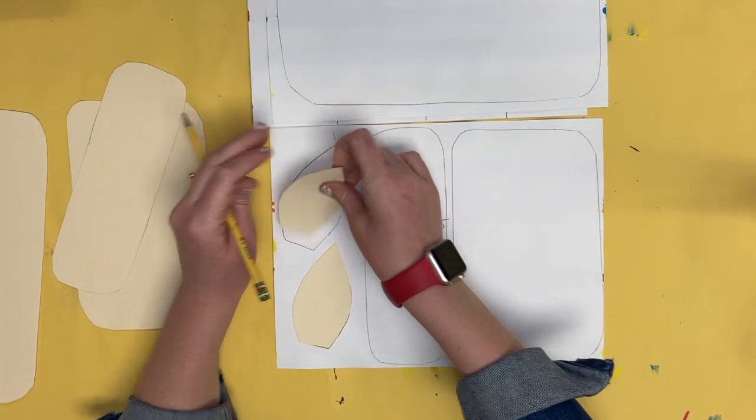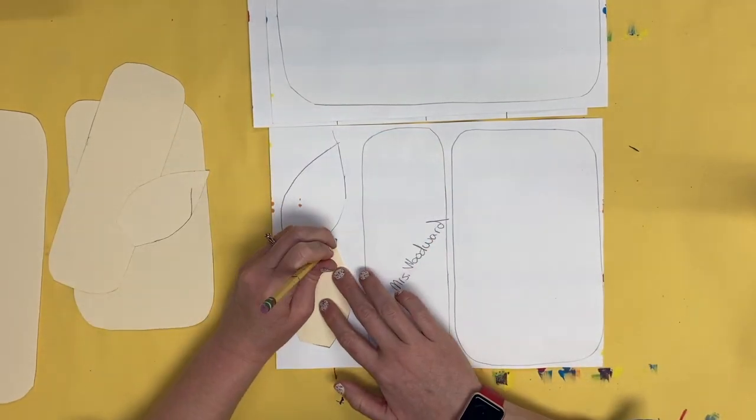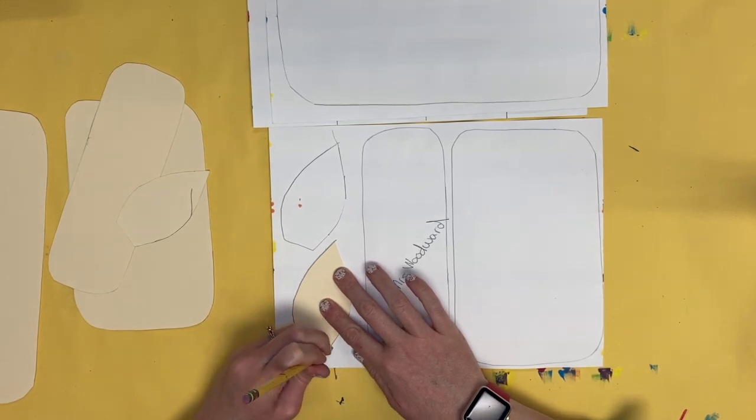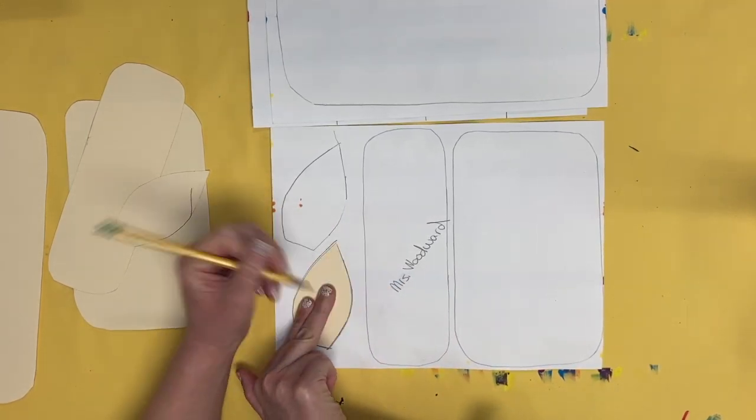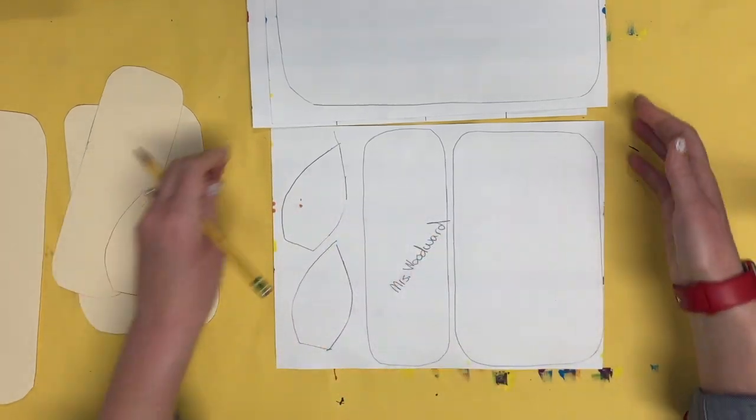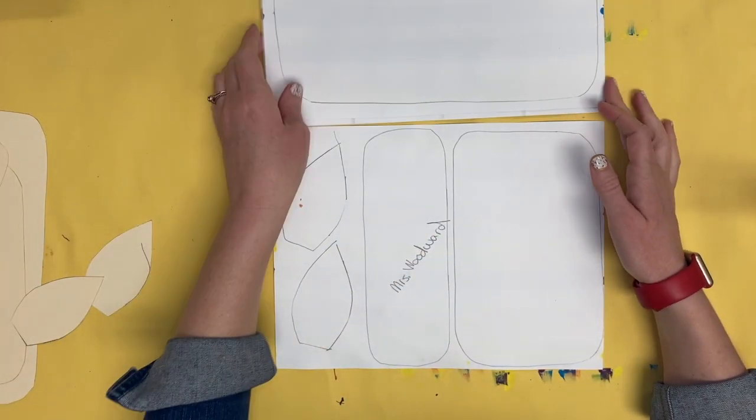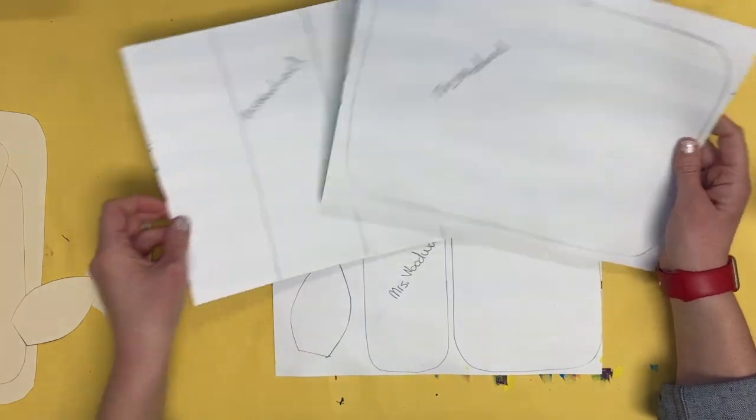Once you have all the lines and shapes drawn onto your paper, you can raise your hand and ask for a pair of scissors. I'm going to check your work to make sure you got it right and then I will give you a pair of scissors.